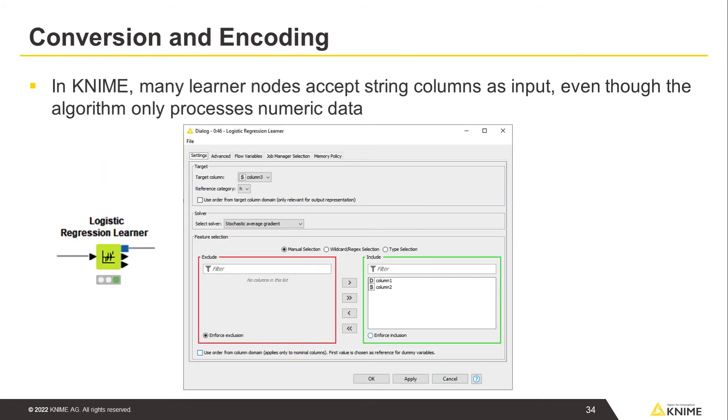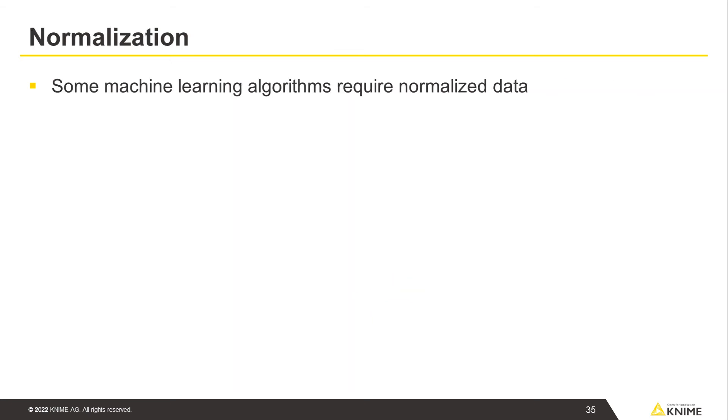Note that in KNIME, many learner nodes for machine learning accept string columns as input, even though the algorithm only processes numeric data. For example, the logistic regression learner node accepts categorical input columns, because the node automatically transforms them into multiple encoded columns.